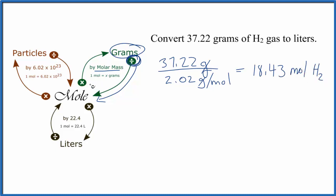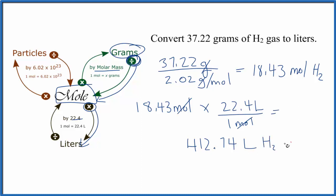Now we've got our moles and we can multiply by 22.4 to get liters. There are 22.4 liters in one mole of a gas at standard temperature and pressure. When we do the math, moles cancel out and we end up with 412.74 liters of hydrogen gas.